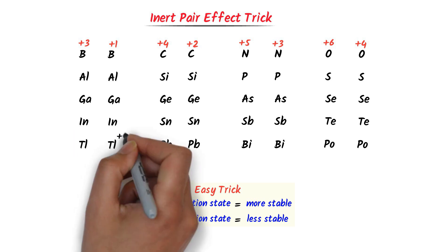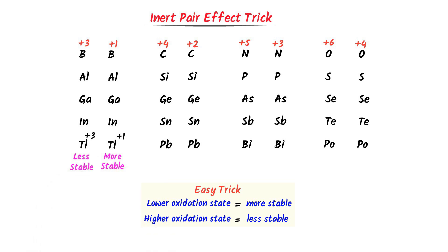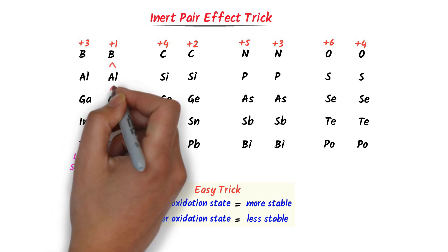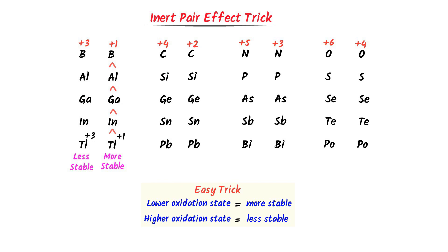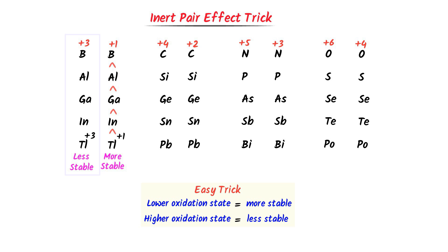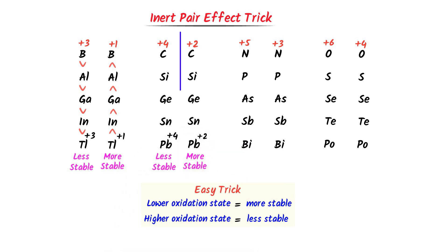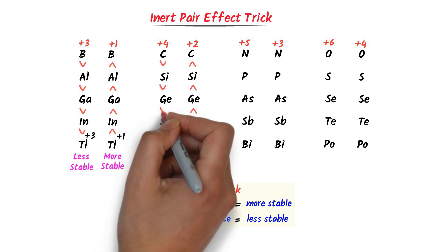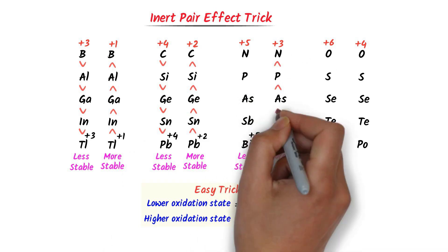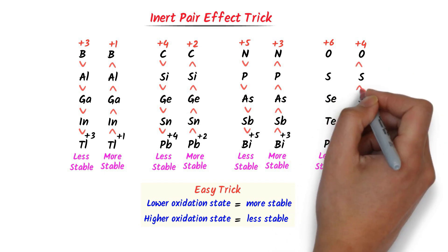Thallium +1 ion is more stable than thallium +3 ion. From this, we derive that in the case of the +1 oxidation state, stability increases down the group, while for the +3 oxidation state, stability decreases down the group. Similarly, in the carbon family, lead +2 ion is more stable than lead +4 ion — stability increases down the group for +2, and decreases for +4. The same trends apply for the nitrogen family and the oxygen family.